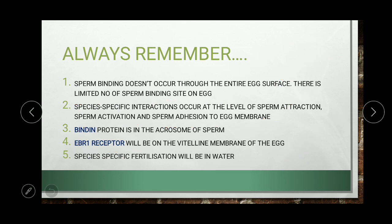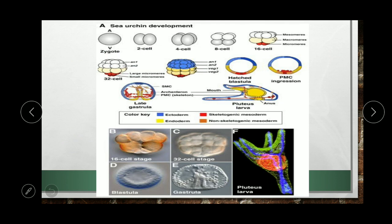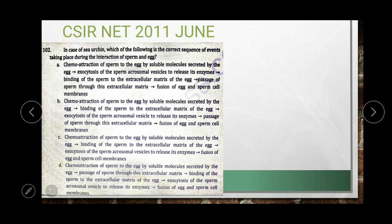After fertilization, embryonic development proceeds: zygote → 2-cell → 4-cell → 8-cell → 16-cell → 32-cell → blastula → gastrula → pluteus larva. The pluteus is the larva of the echinoderm. So in sea urchin, the pluteus larva is formed.